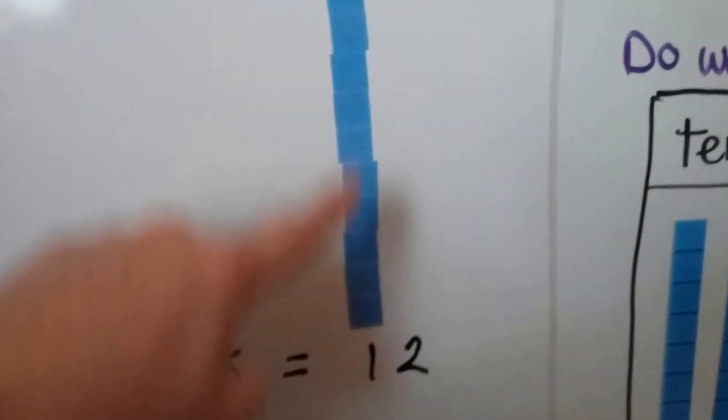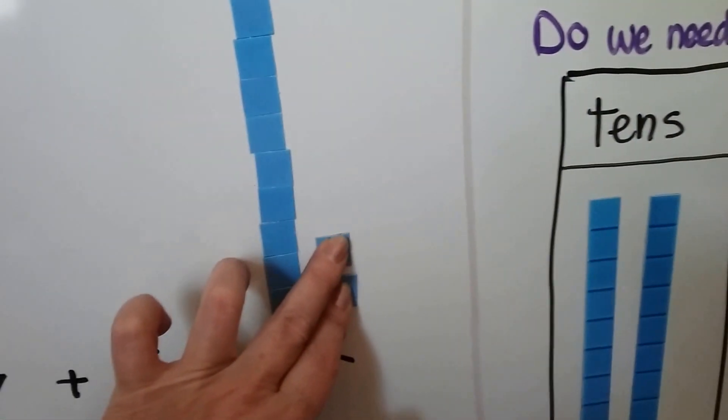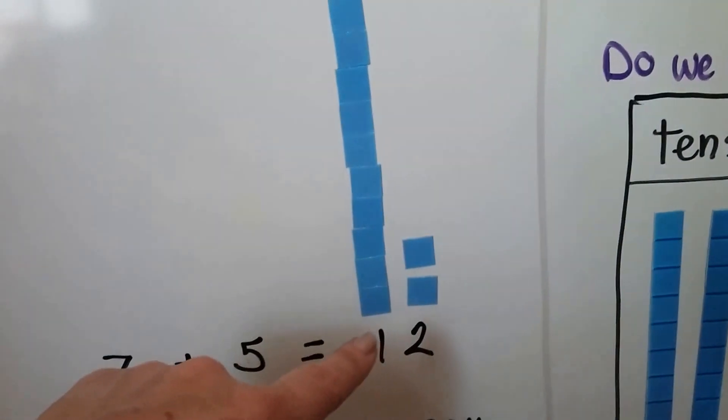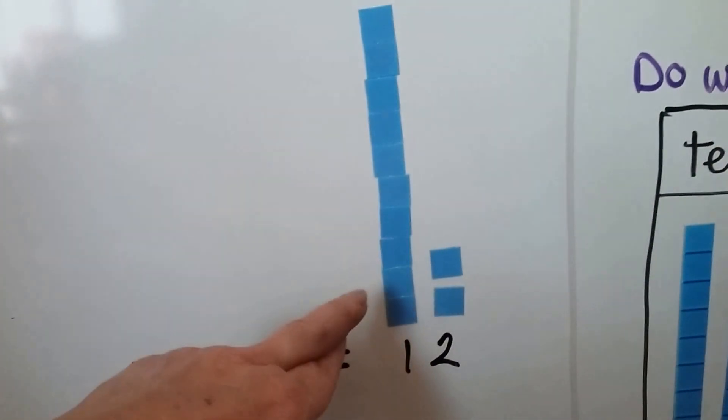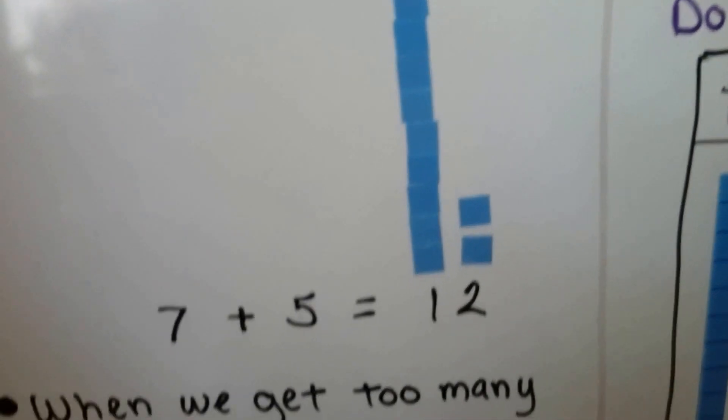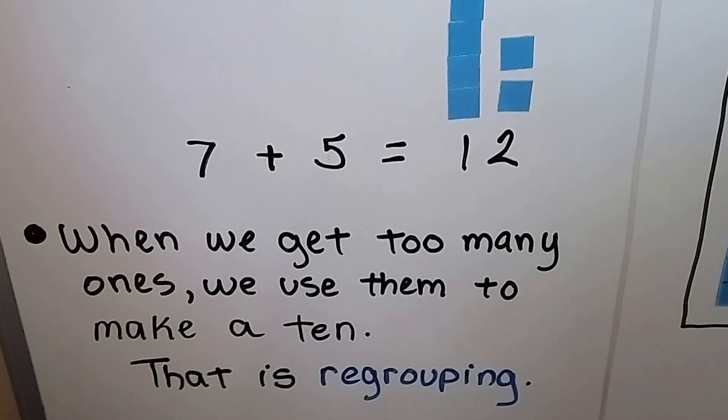So that's one 10 long, right? And look, we have 2 little ones left over. So we have a 10 and 2 ones. See how that happened? We put all these little ones together to make a long of 10. When we get too many ones, we use them to make a 10, and that's regrouping.